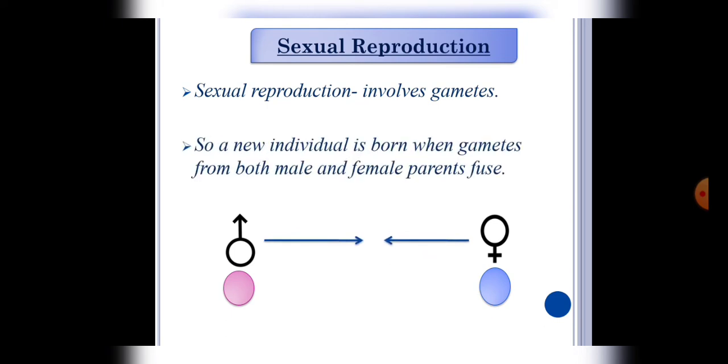Sexual reproduction. Students, as the name is also suggesting, it involves sex cells or gametes. So a new individual is born when gametes from both male and female parents are fused.